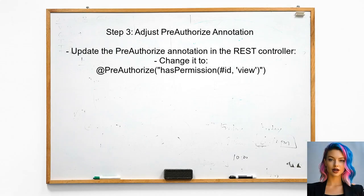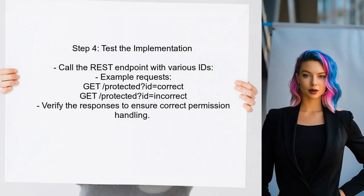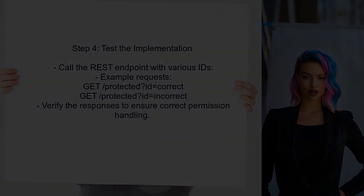The user should also ensure that the REST controller is correctly set up to pass the required parameters to the hasPermission method. This involves adjusting the @PreAuthorize annotation. Finally, the user should test the implementation by calling the REST endpoint with different IDs to verify that the permission checks are functioning as expected.